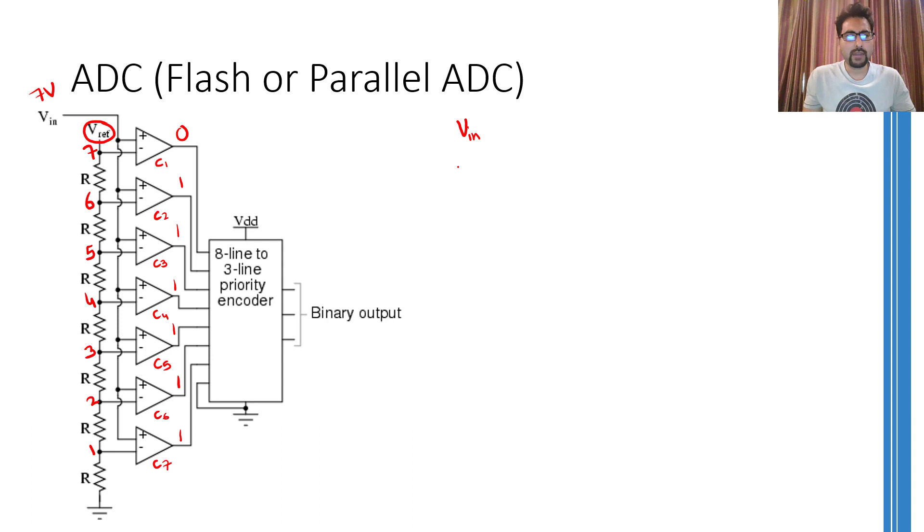For example, this VIN can be greater than or equal to 7 volts, or it can be greater than or equal to 6 volts, greater than or equal to 5 volts, greater than or equal to 4, then we can have a 3, then a 2, a 1, and a 0.